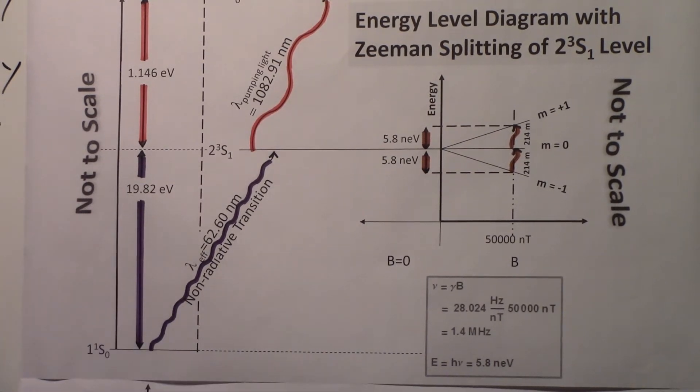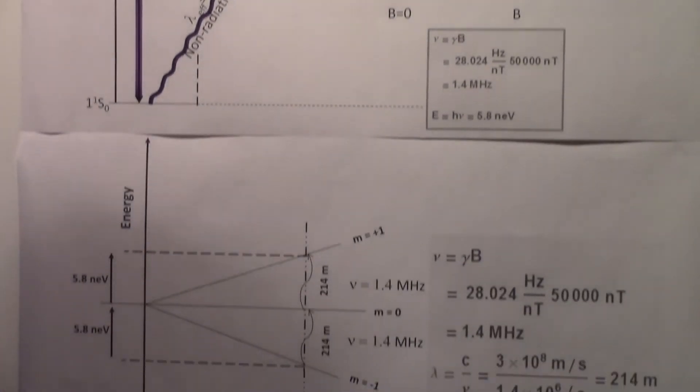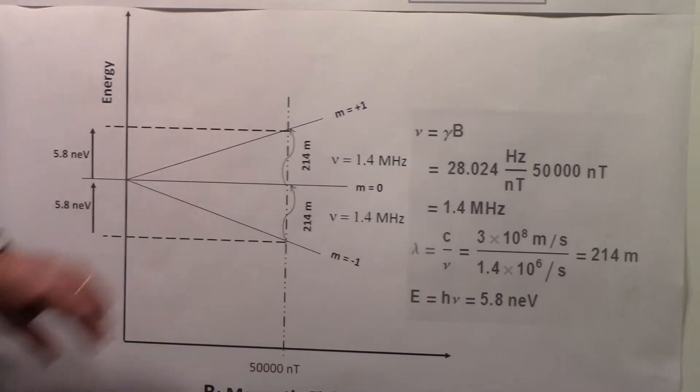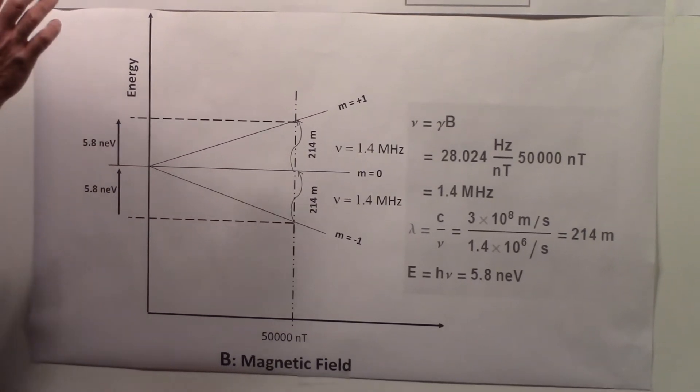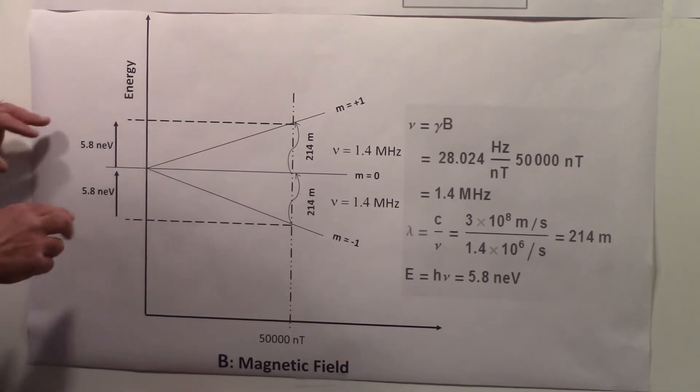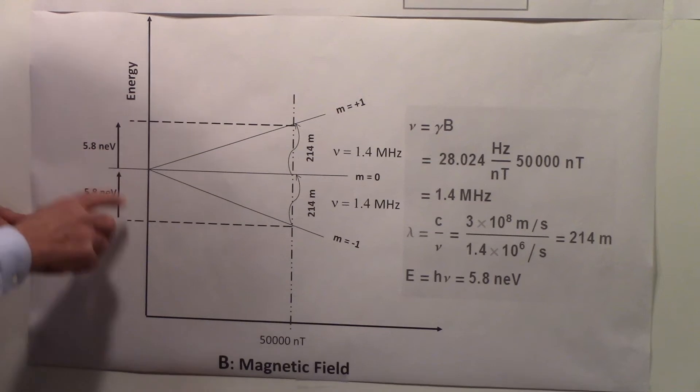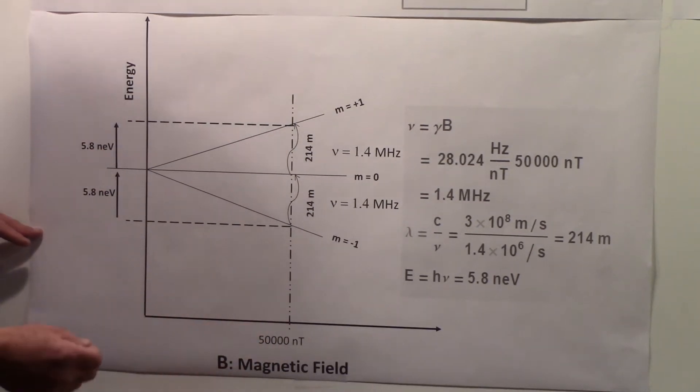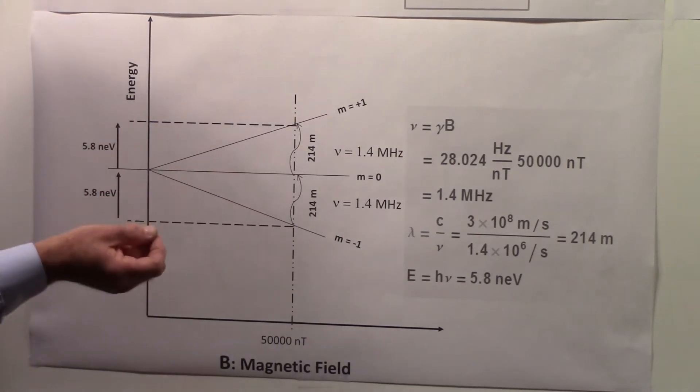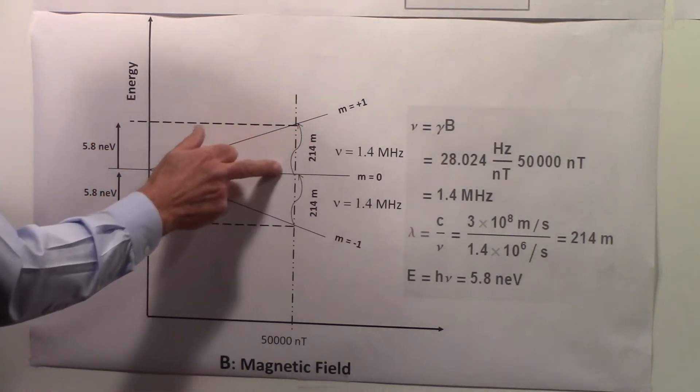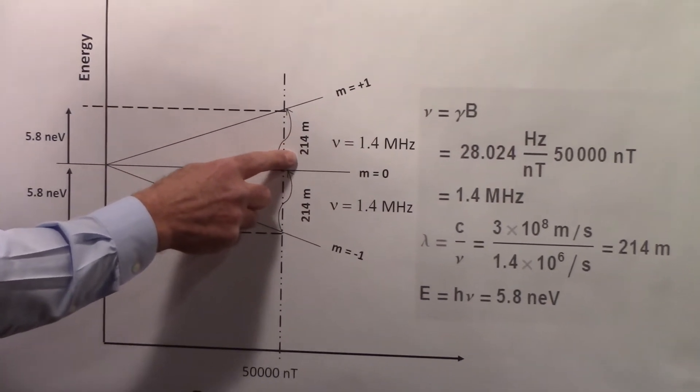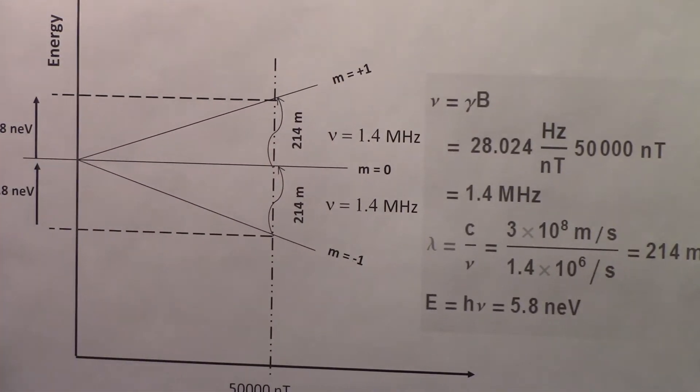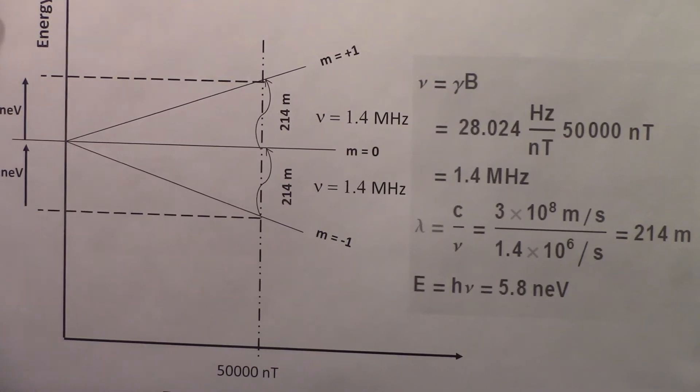Now, to get into more of the details of this, we'll come down to this diagram here. Again, I'm showing the line split. I indicated before what the wavelengths of the transitions were and the energy level. So this energy level here of 5.8 nanoelectron volts, when the field is 50,000 nanoteslas, if you convert using Planck's equation E equals h nu, you would find that the frequency would be 1.4 megahertz corresponding to 212 meters in wavelength. So again, it's a very small amount of energy difference.